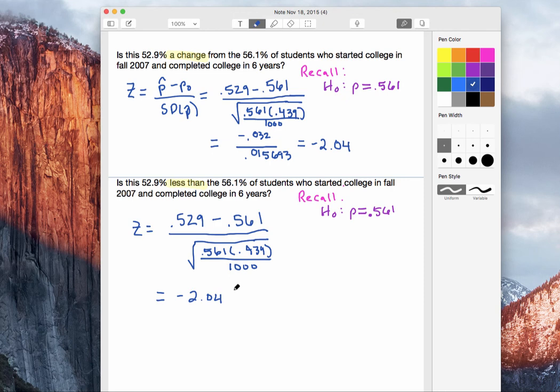So at this point, we've computed how far different our sample proportions are from the hypothesized proportions. And the next step of the hypothesis test will be to decide, is the sample proportion far enough away from the mean to reject the null hypothesis?